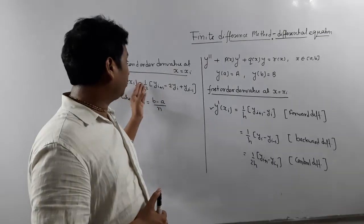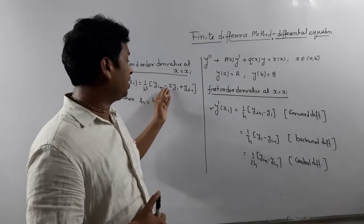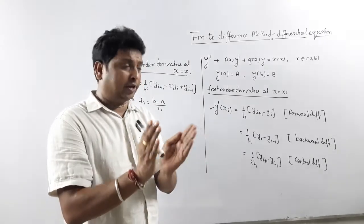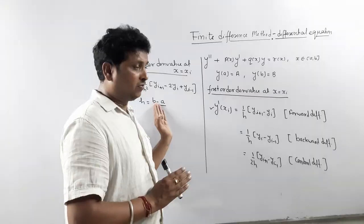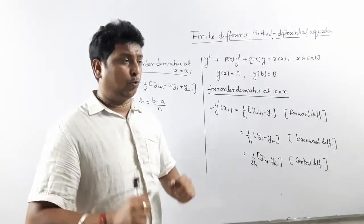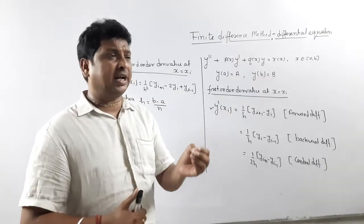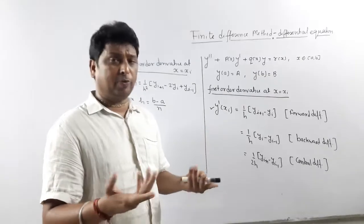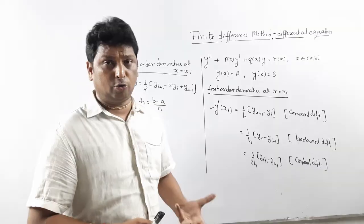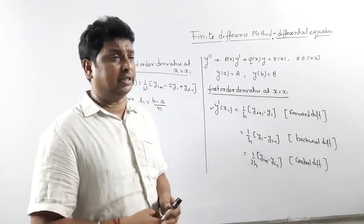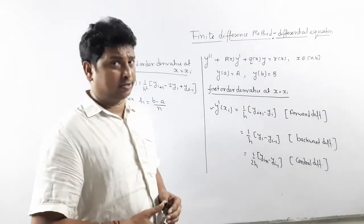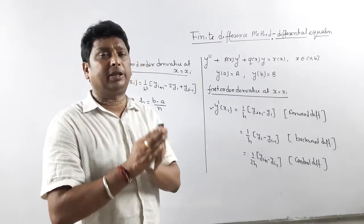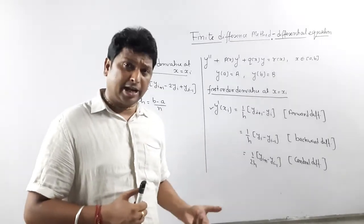For y'', use the formula (1/h²)(yᵢ₊₁ − 2yᵢ + yᵢ₋₁). Substitute y' and y'' into the given differential equation to get one equation. Then take i = 1, 2, 3 to generate a system of three equations with three unknowns. This forms a tridiagonal system, so it is best to use a tridiagonal solver or Gauss elimination.